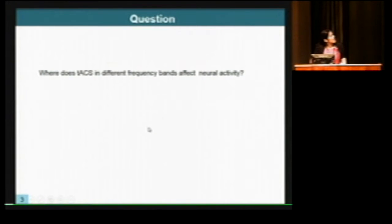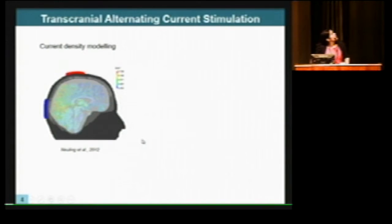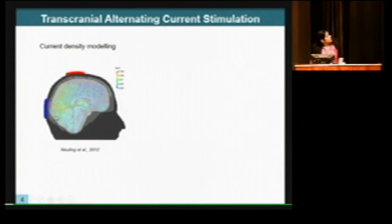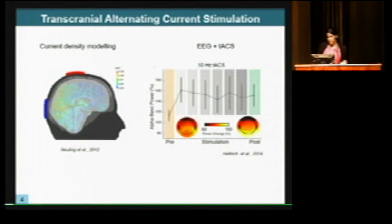However, looking at what the stimulation is doing to behavior doesn't tell us what is happening in the brain, and it is highly complicated to make predictions without knowing how the stimulation is changing brain activity. The main question we have is: where is TACS at different frequencies affecting neural activity? Studies modeling current density with this electrode montage have proposed that the current should be stronger in occipital and posterior parietal areas, and EEG-TACS studies have found an increase in alpha oscillation power in those regions with 10 Hz stimulation.